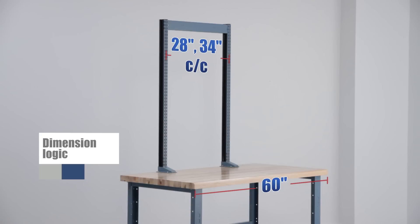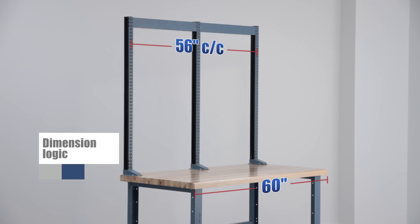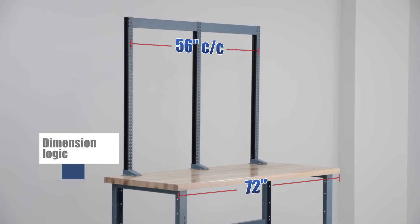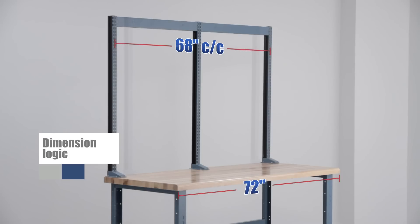For a surface that is 60 inches wide, you can install a single frame. However, we recommend a double frame 56 inches center on center. Finally, for a 72 inch wide work surface, you can install any of the aforementioned configurations, but the optimal solution being the 68 inch wide frame.